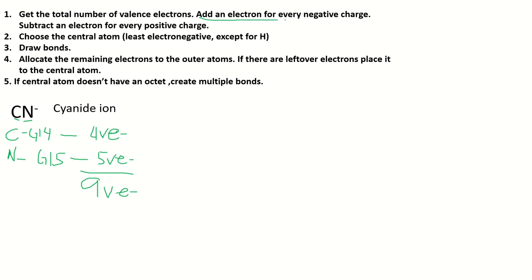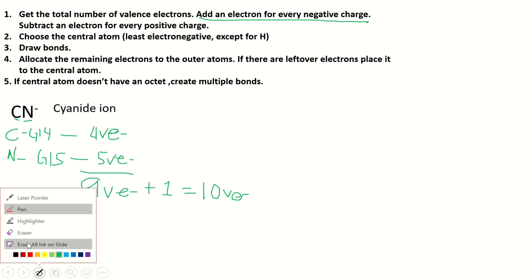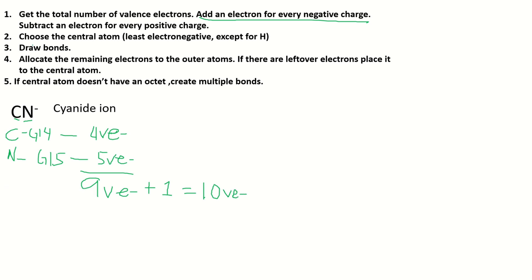Now, add an electron for every negative charge. We have a negative charge here, so this is an anion. We add 1 electron, giving us a total of 10 valence electrons.